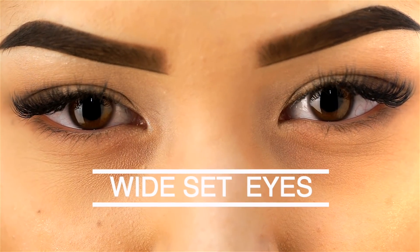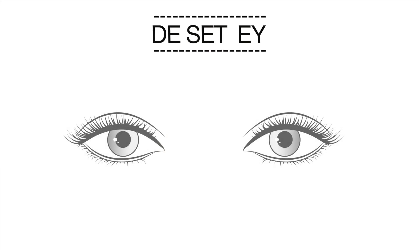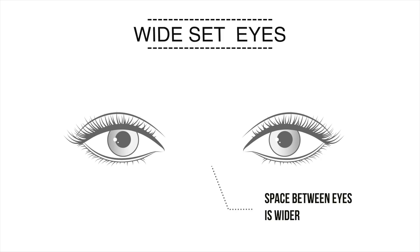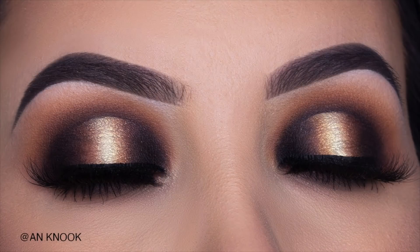Next one we have is the opposite of close set eyes — and that's wide set eyes. Your eyes may be wide set if the space between your eyes is far apart. You'll have more space between the eyes than between the outer edge of the eye and the temples. The technique is the total opposite of close set eyes: you can pull off darkness in here on the inner corner and keep out here a little bit lighter. That's going to bring the eyes in — darkness makes things smaller, lightness makes things bigger. So to decrease that inner space, put some darkness there and keep the outer corners light and bright.